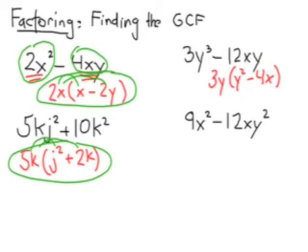Down below that, a 9x² minus 12xy². I can factor out a 3 and an x. So on the inside binomial I would end up with a 3x minus 4y².